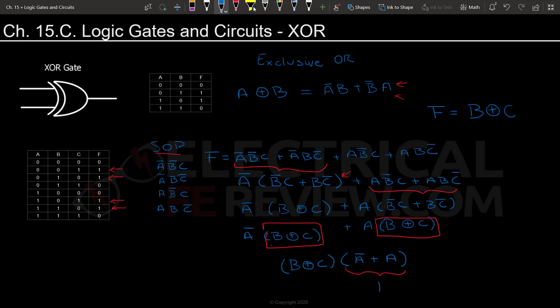So even though we were given this really complex three variable function, we were able to simplify it down to a one gate circuit. Because in this case, the value of A is not impacting. The value of A has no input into F. The only things that have input into F are B and C. And that's why we were able to simplify it so much.